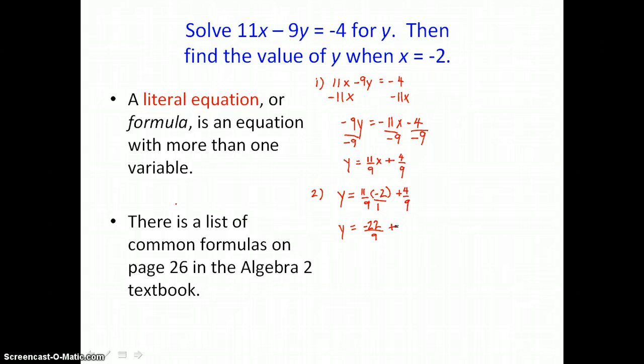We want to multiply numerators here. 11 times negative 2 is negative 22 over 9. So negative 22/9 plus 4/9. We have a common denominator, so we can add our numerators. Negative 22 plus 4, there's more negatives than positives, so we get negative 18 divided by 9. So y is equal to negative 2. When x is negative 2, y is also negative 2.